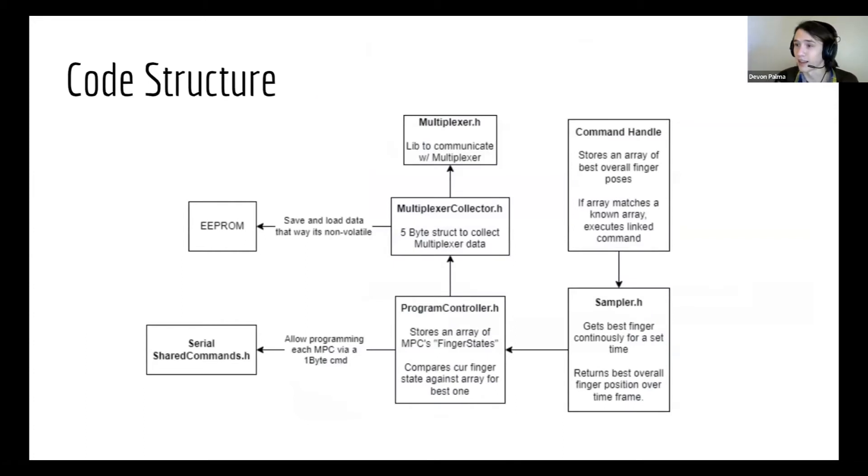Next is a little diagram I wrote up on the code structure because my code was a bit too much for explaining in one paragraph. It all starts at the multiplexer library, which is a custom library that I wrote to communicate with the multiplexer and read the flex values.